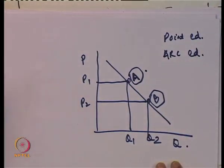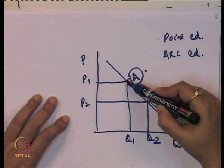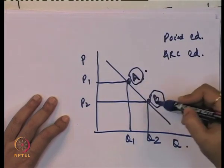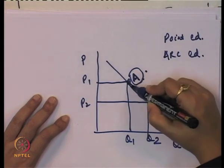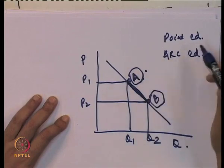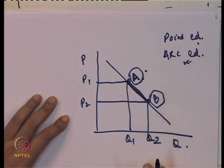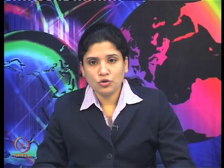There are two types of price elasticity of demand when it comes to computation. First, when we measure elasticity at a point — this is known as point elasticity of demand. Second, when we measure elasticity in a segment or arc — this is known as arc elasticity of demand. Let us see the formulas to compute each.